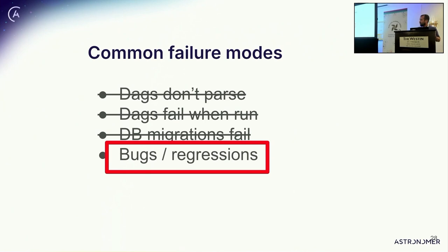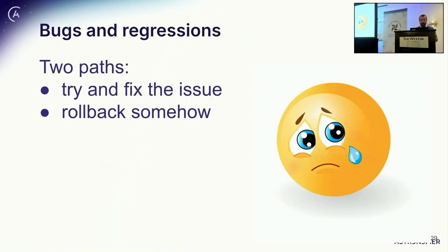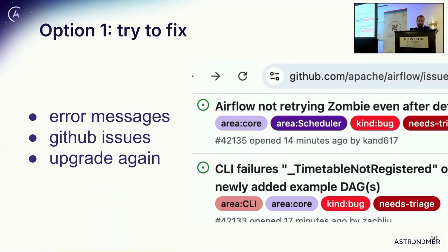Bugs and regressions — the fourth and final topic. So we did everything right: we tested, we have a unit test to make sure our DAGs parse, we did something like an integration test to make sure all of our services work properly, we planned for migrations and maybe did a dry run. But then we upgraded and now things aren't working right for some reason. Maybe there's a weird error, or scheduler performance has really tanked. Well, you have two paths: one is to try and march forward and fix the issue, and the other is to try and roll back.